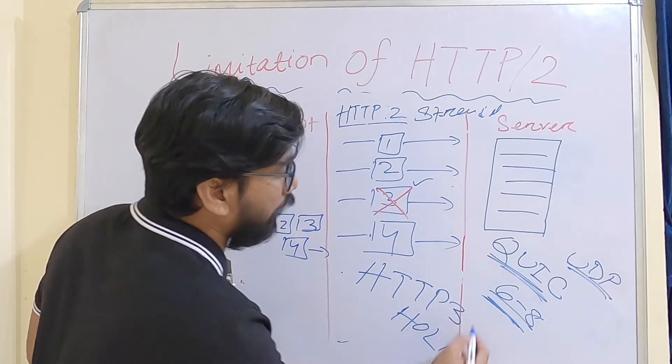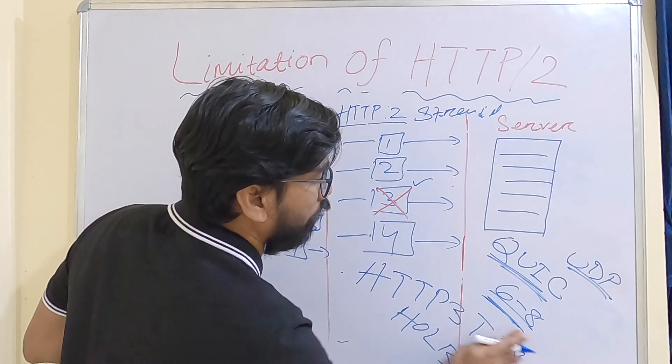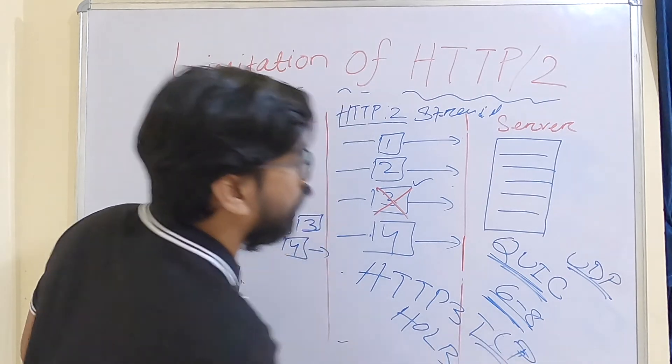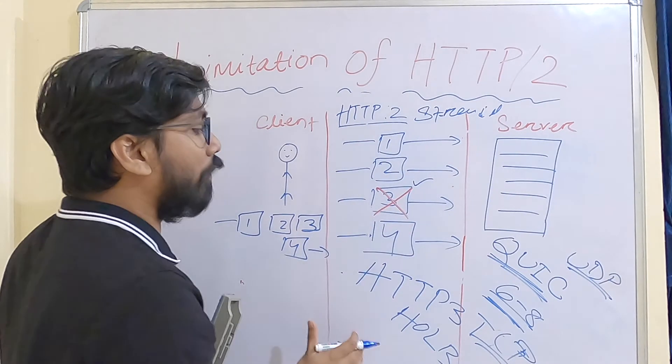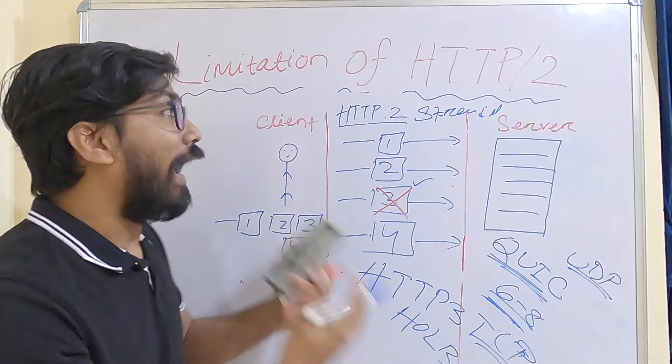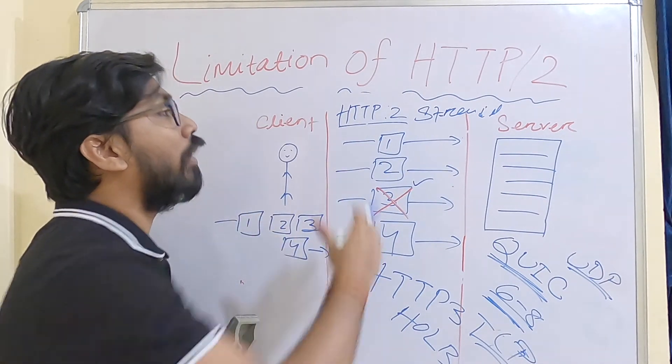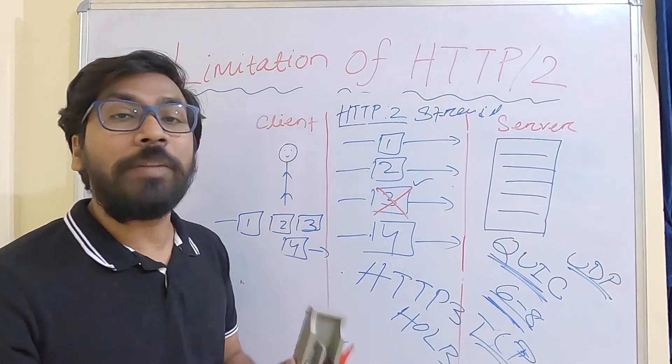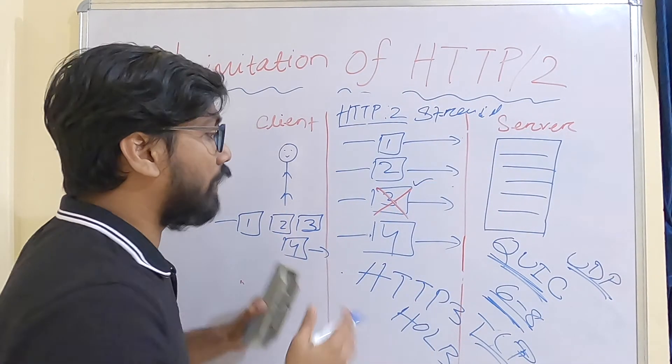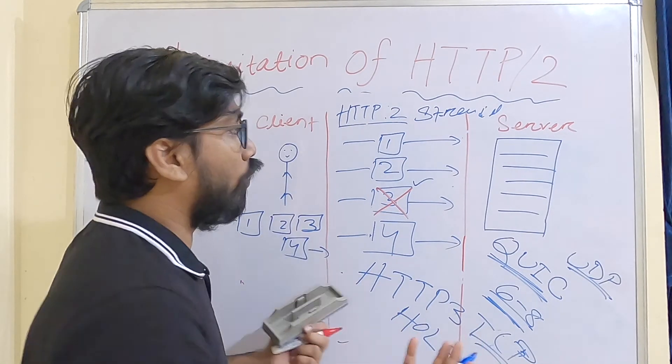This is how HTTP/3 solves head of line blocking in TCP. This is the limitation of HTTP/2 - the TCP level head of line blocking - and this problem is resolved by HTTP/3. HTTP/3 is the next version of HTTP/2.